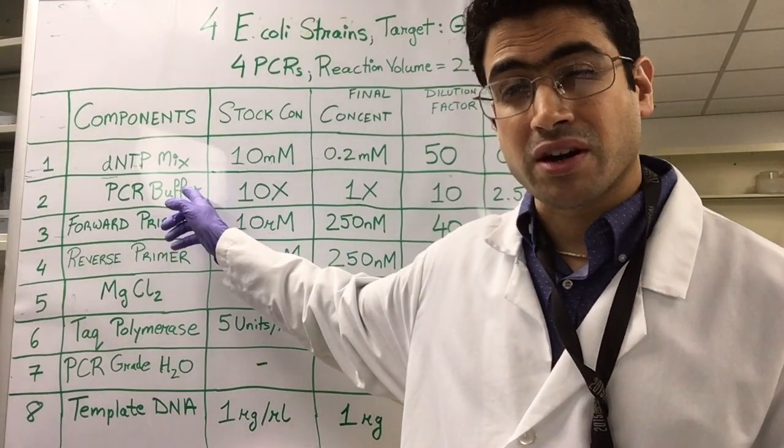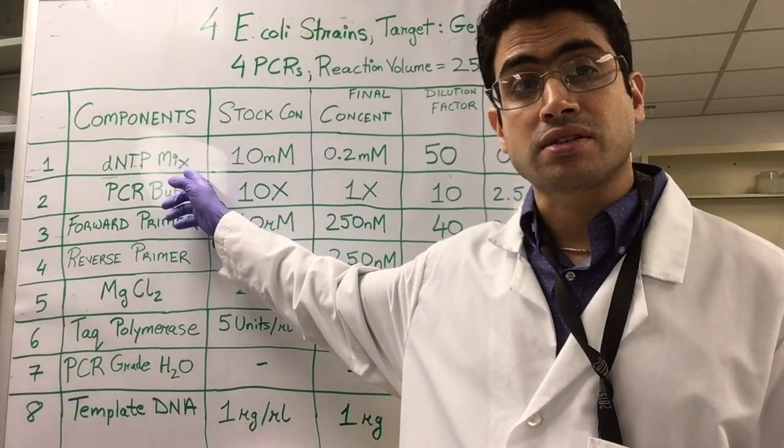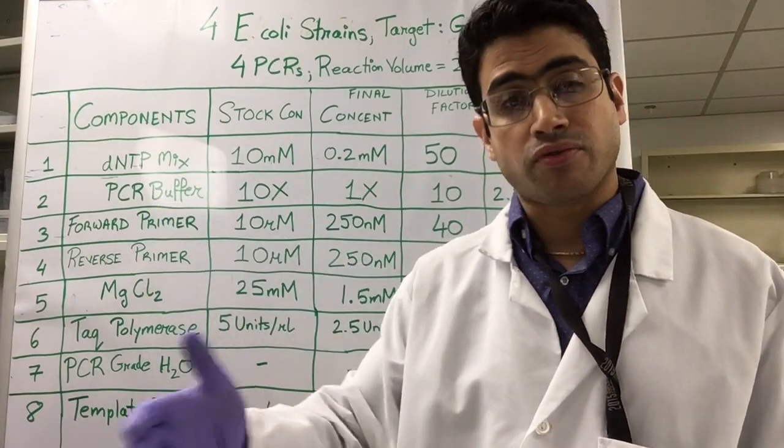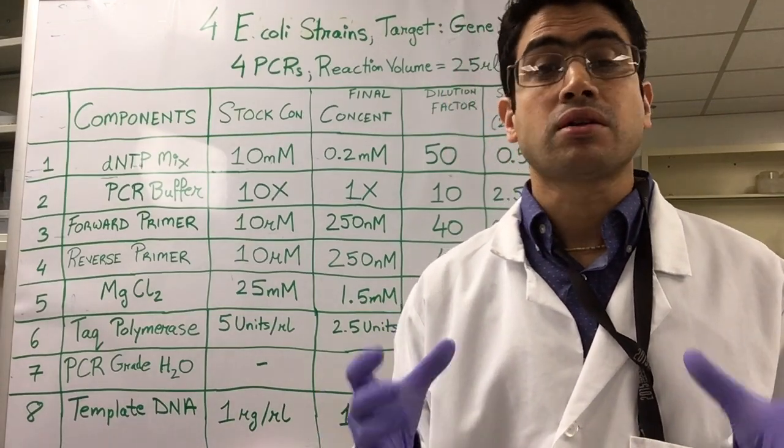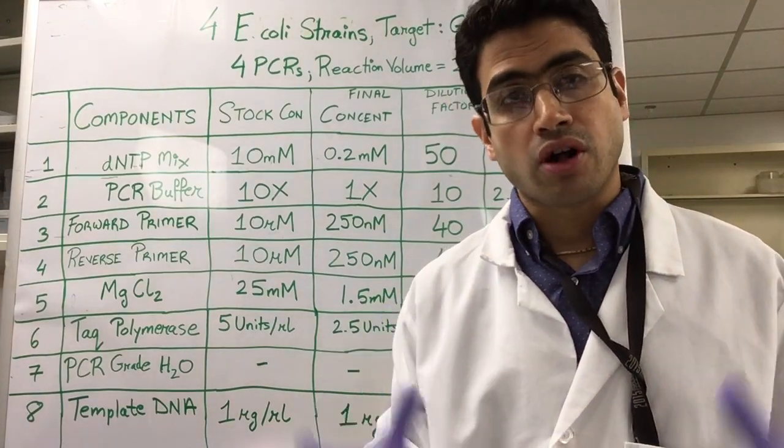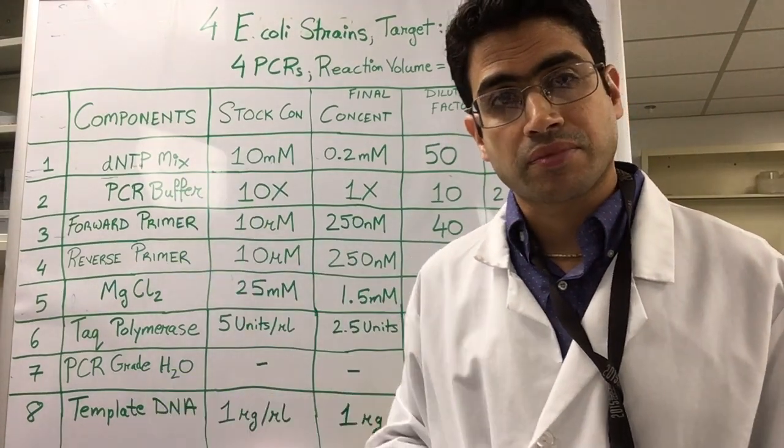So it would be very cumbersome, very inefficient for me to take each of these components and add them to the four PCR tubes. It makes more sense for me to make a bulk master mix for all the four reactions together, adding each of these components.